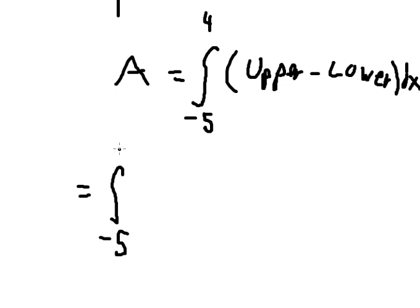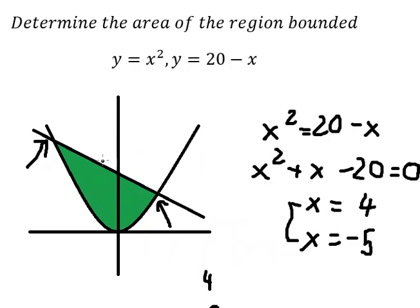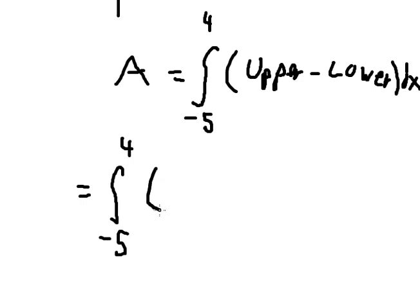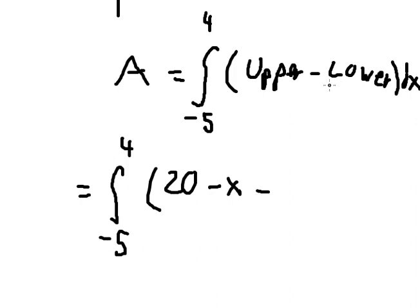The upper function here is 20 minus x. The lower function is x squared.